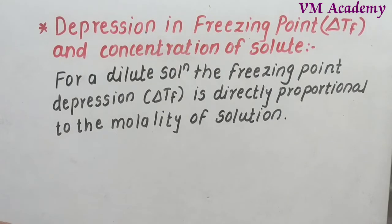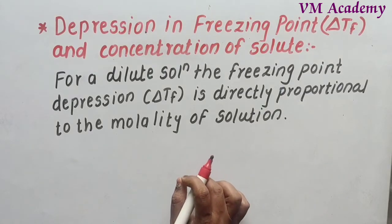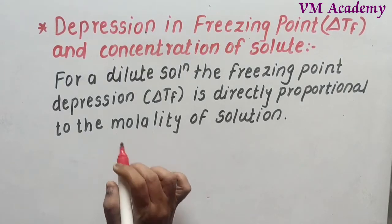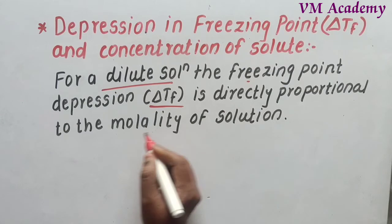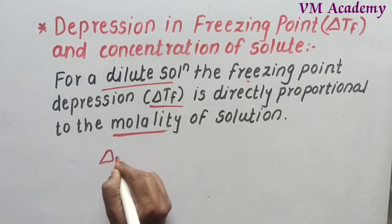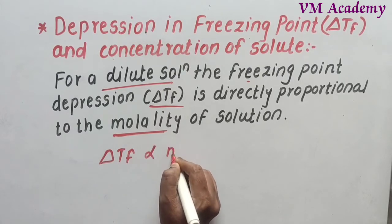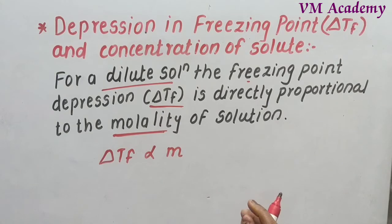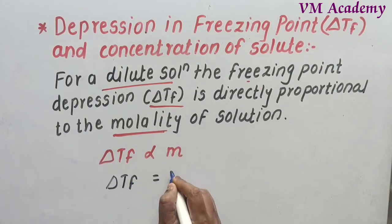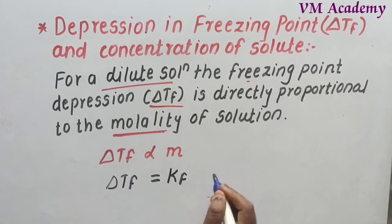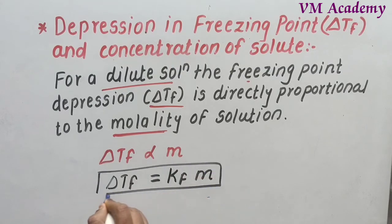So let's see the relation between depression in freezing point and concentration of solute. For diluted solutions, freezing point depression — delta TF — is directly proportional to the molality of the solution. So delta TF is directly proportional to small m (molality). To remove the proportionality sign, we introduce a constant: KF, which is the proportionality constant, known as the freezing point depression constant.